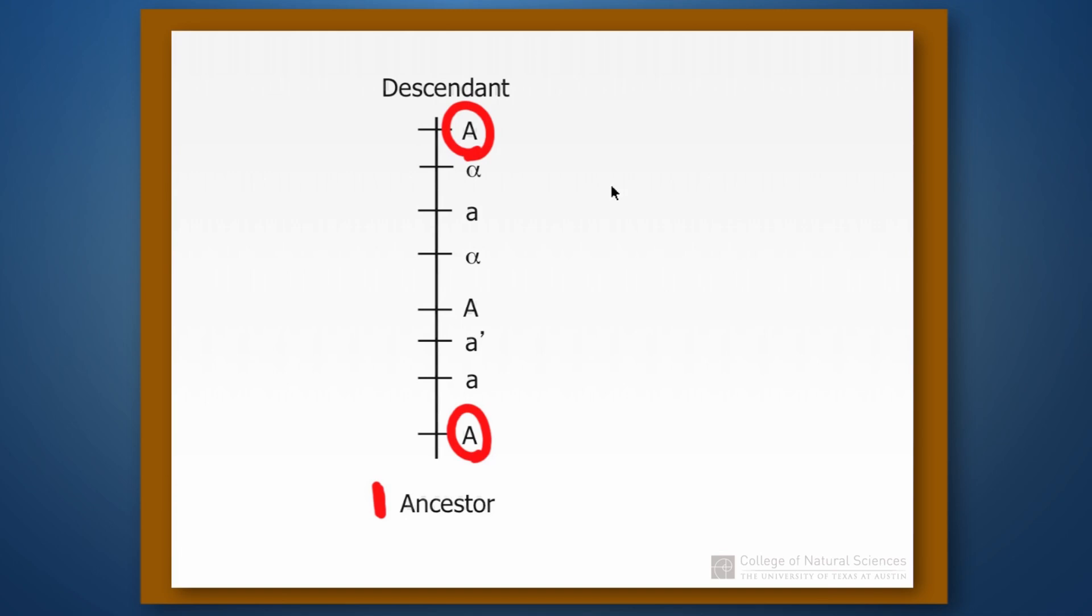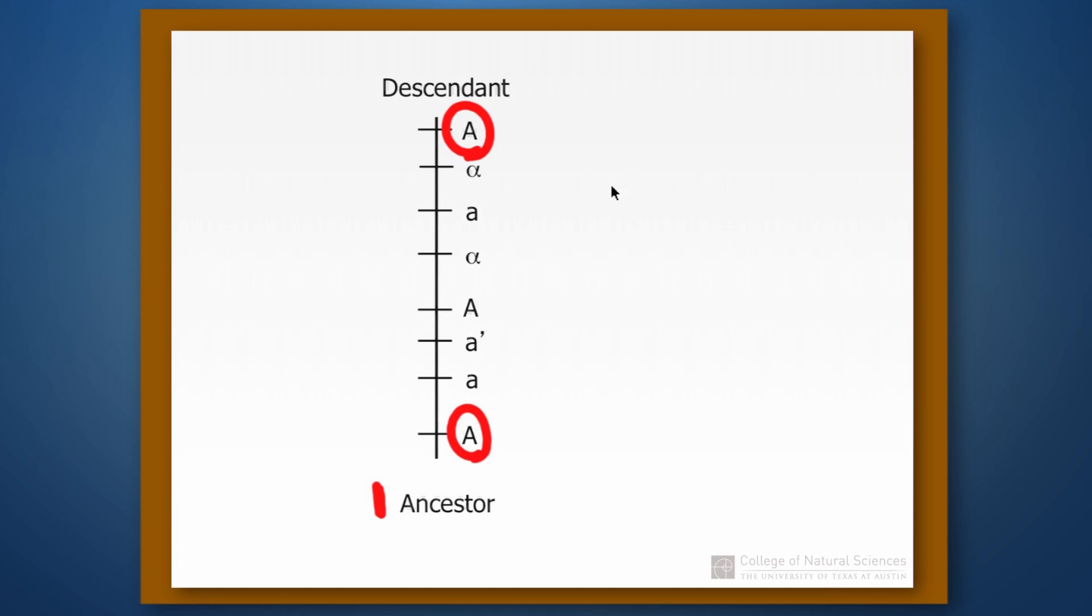So when we have lots of evolutionary change taking place on a branch, then parsimony is the wrong assumption because in fact the most parsimonious answer isn't the correct answer in this case, that big A in the descendant was inherited directly from the ancestor having big A.